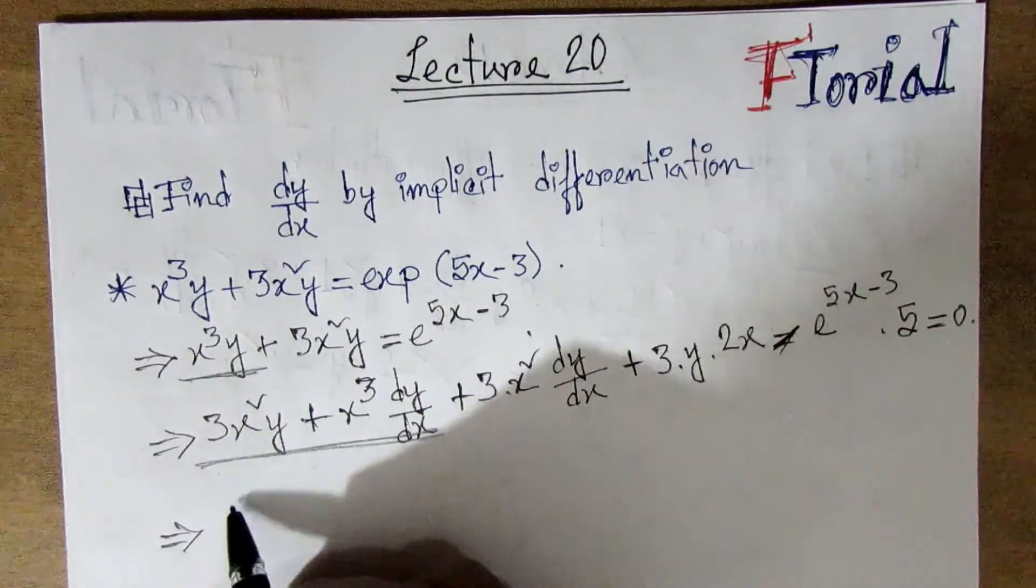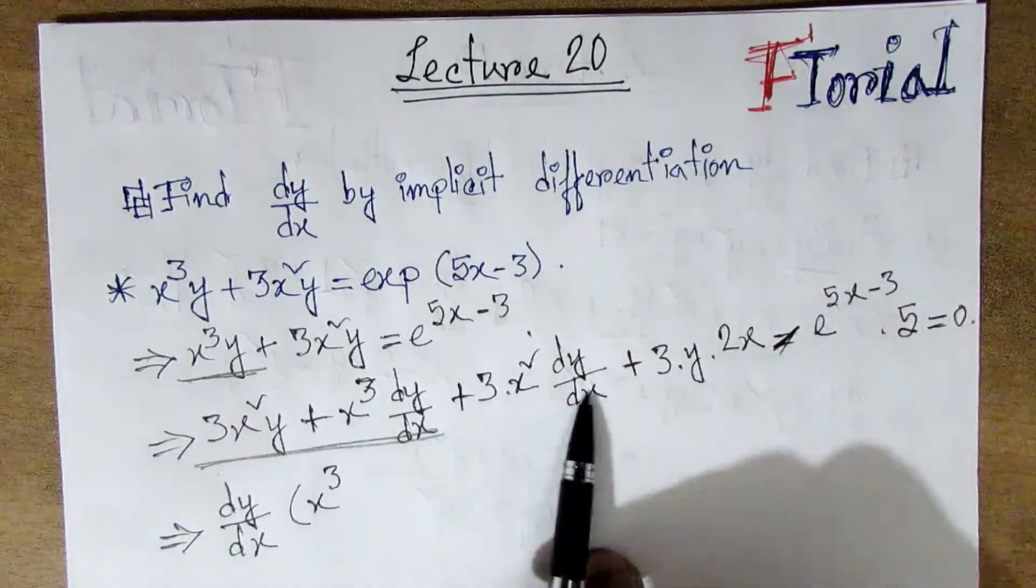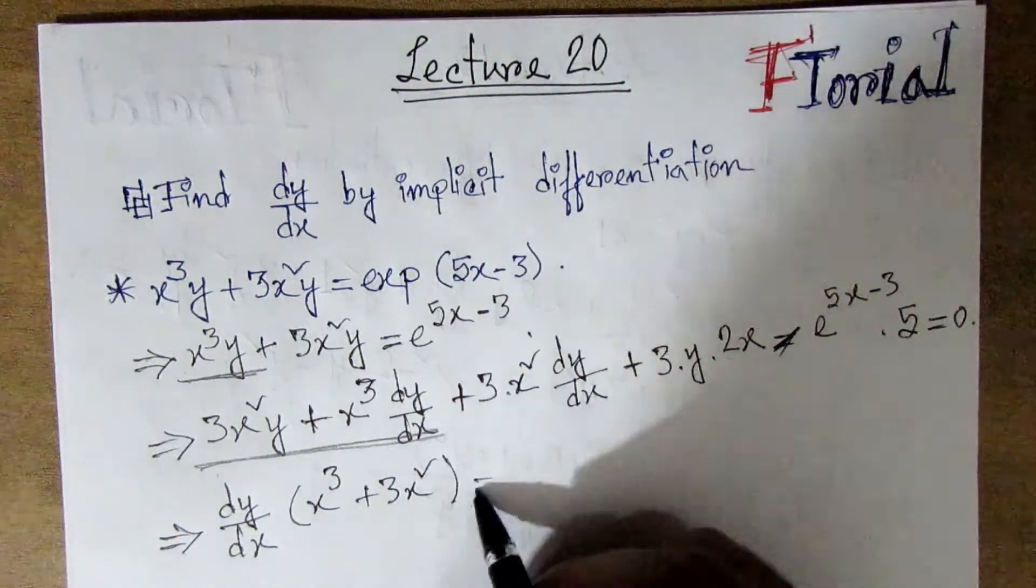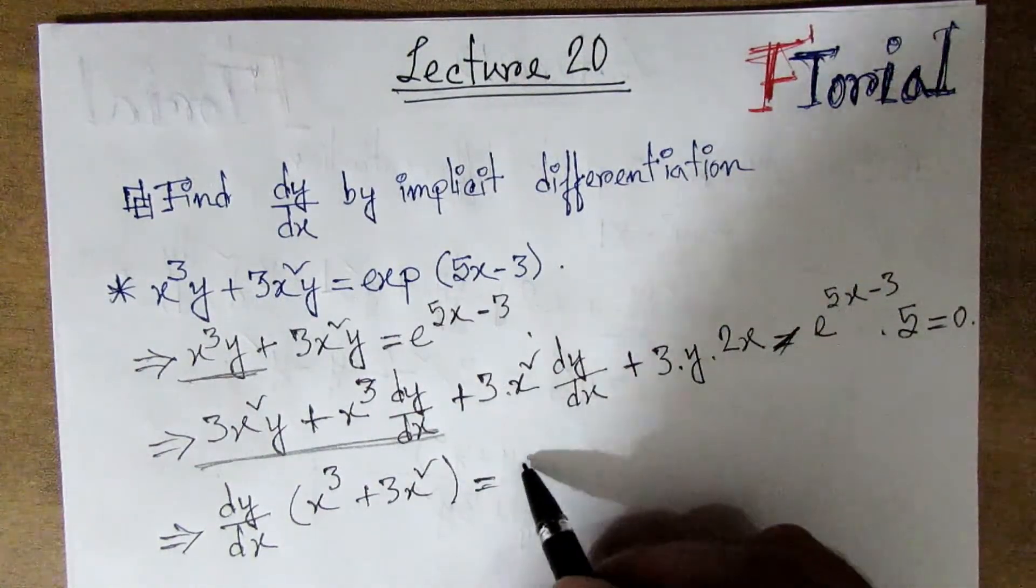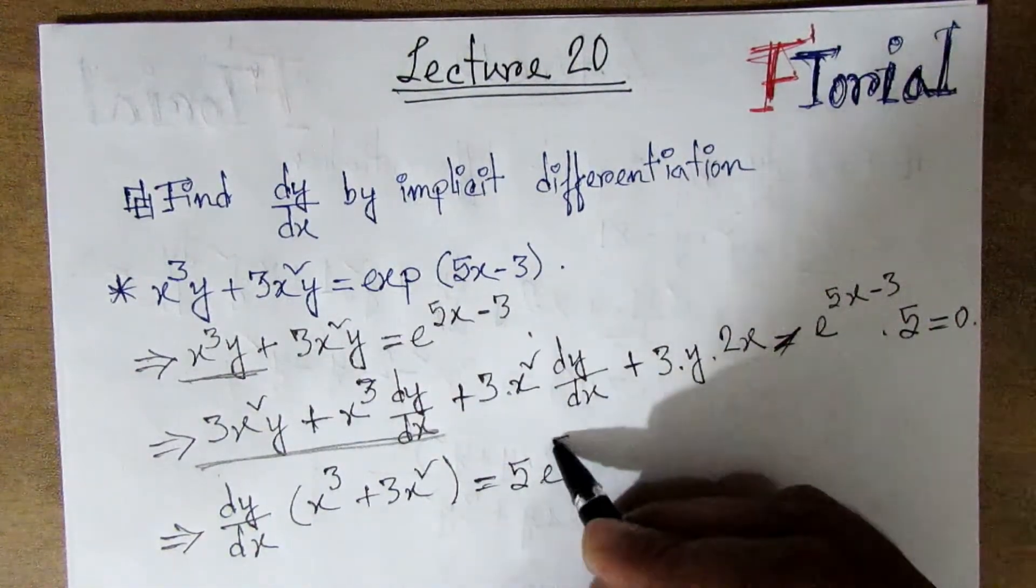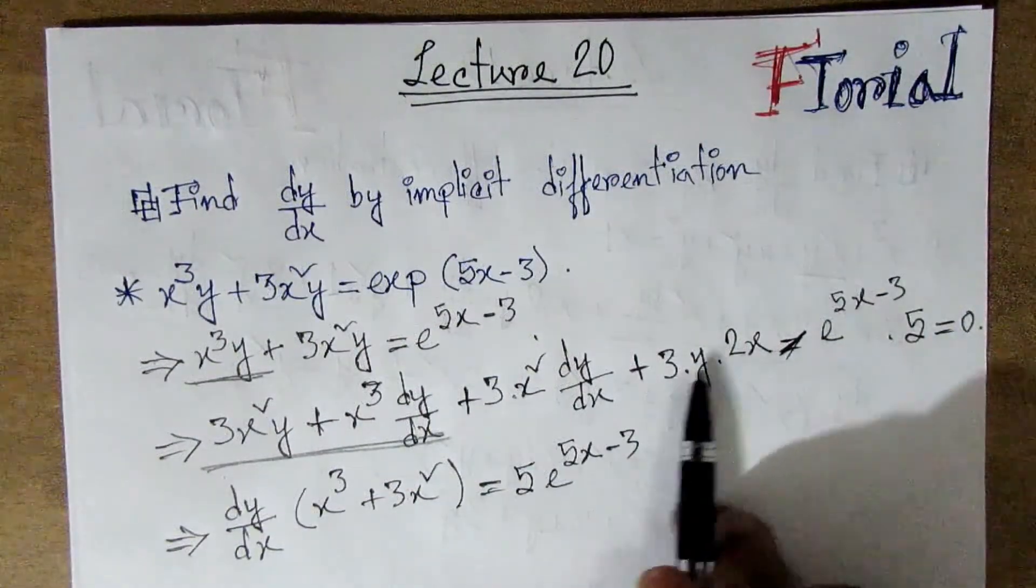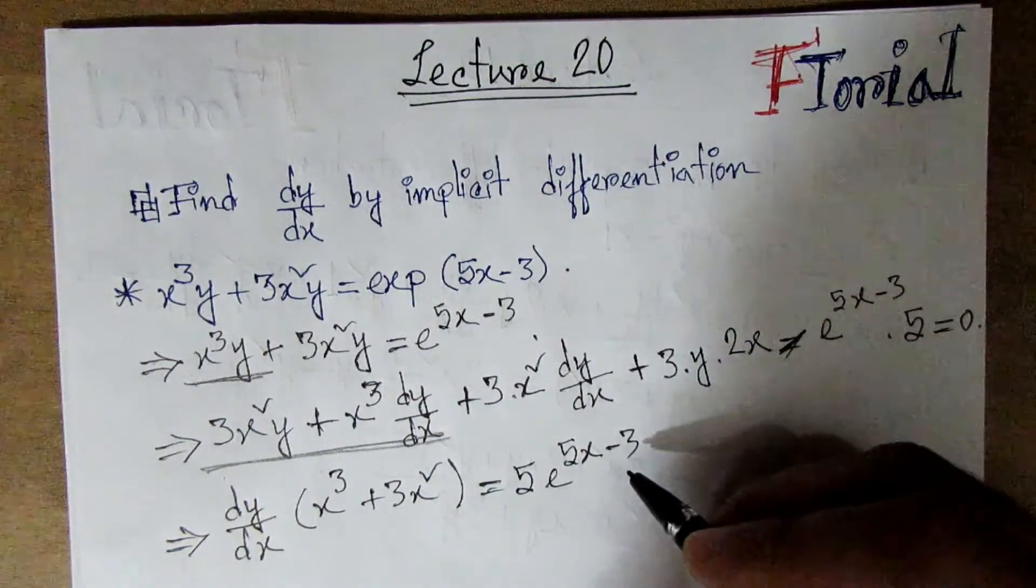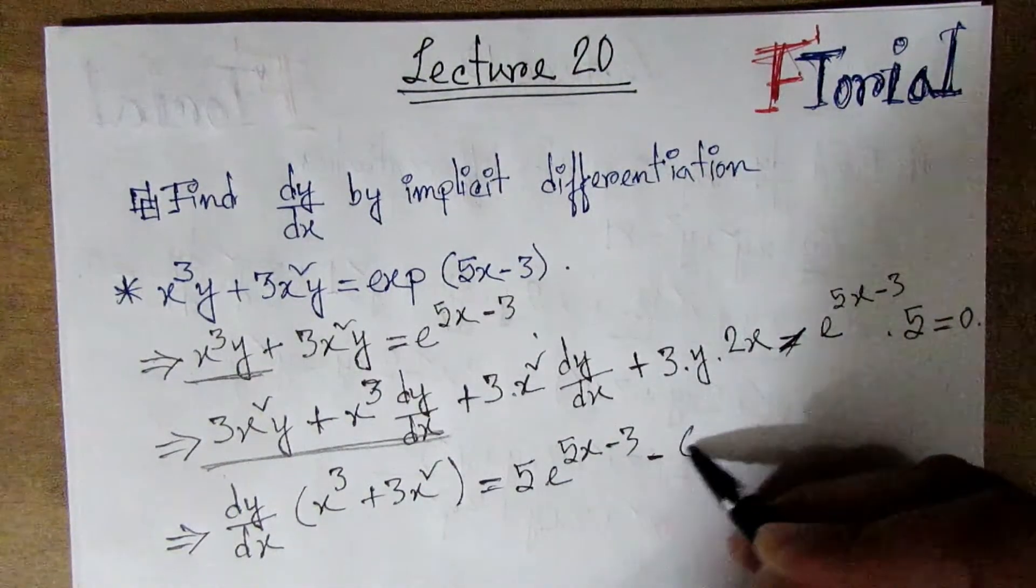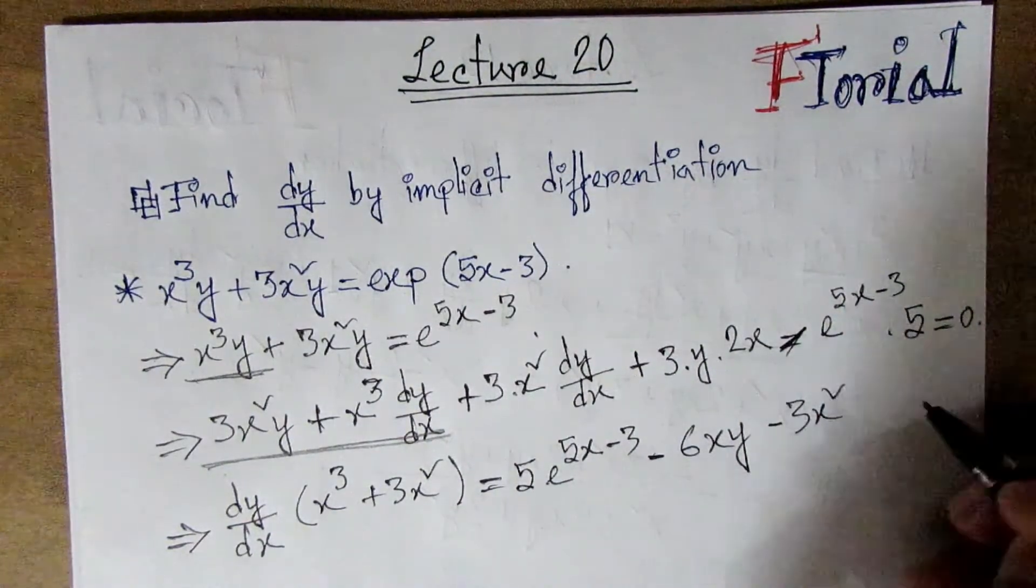Now I'm going to collect all the dy/dx terms on one side. We have 3x² dy/dx from one term, then minus 6xy from the other terms, and minus 3x²y.